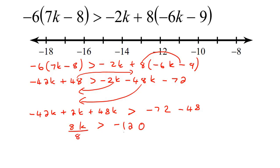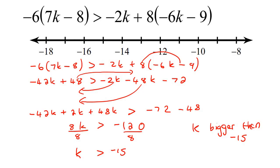To get k by itself, divide both sides by 8. We don't switch the sign because we're not dividing with a negative. So k is bigger than negative 15. Look at the crocodile — it's about to eat the k, so k is bigger. We say k is bigger than negative 15 — not 'or equal to,' because there's no equal sign. So on the number line, we go to minus 15 and use an open circle, not a closed circle. Then since k is bigger than that, we go to the right-hand side. That is our answer.